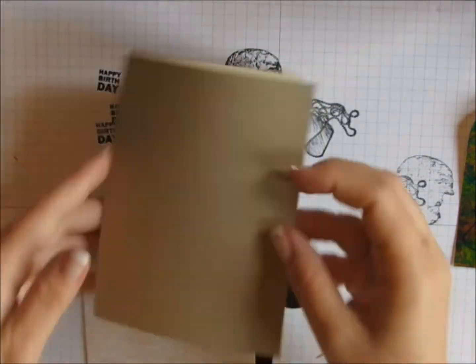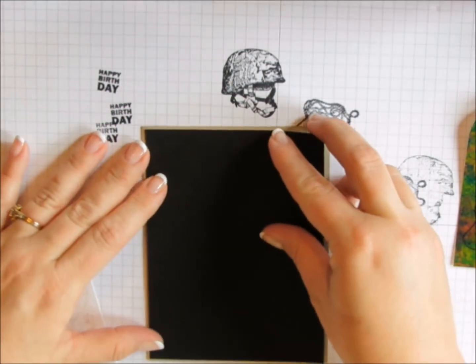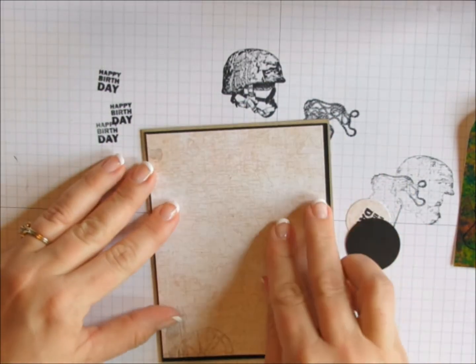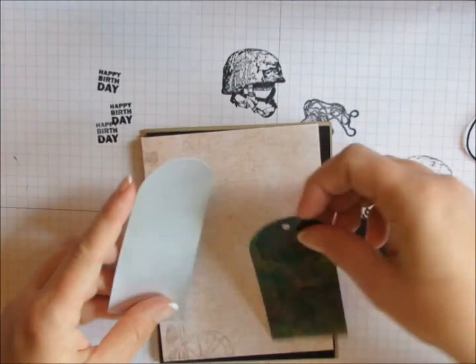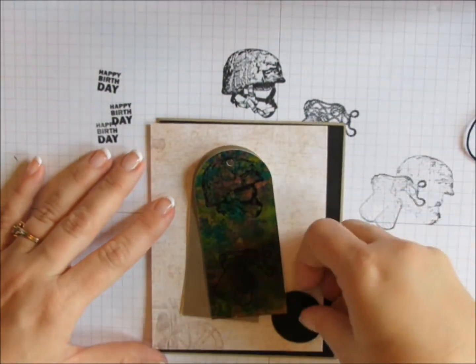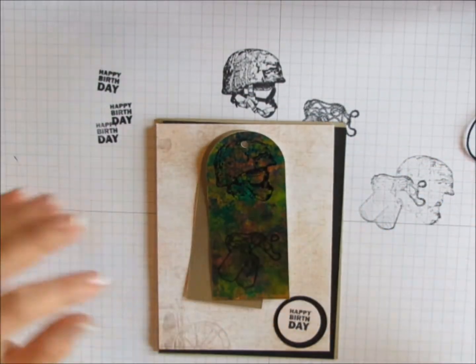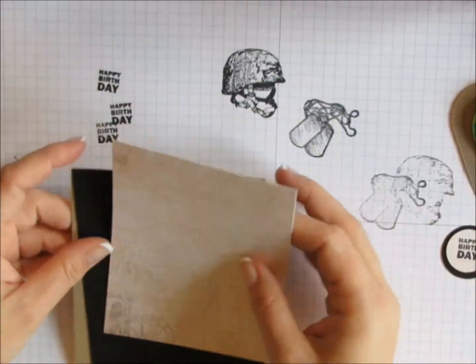My card base is going to be a piece of crumb cake, just your standard four and quarter by five and a half card. I've got a layer of black card stock that's four and an eighth by five and three eighths. And then another piece of background paper from that cartographer pack. And that measures four by five and a quarter. And now I'm just taking my elements and seeing kind of where I want to place them on my card.